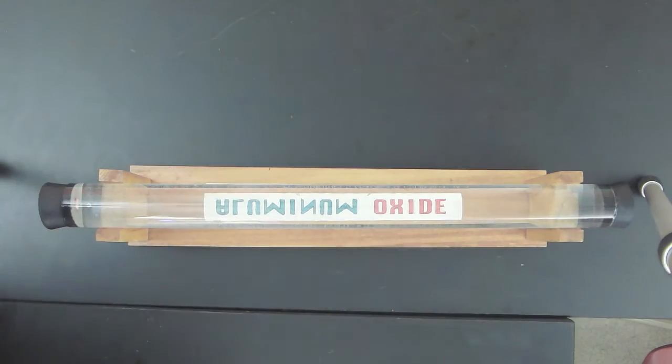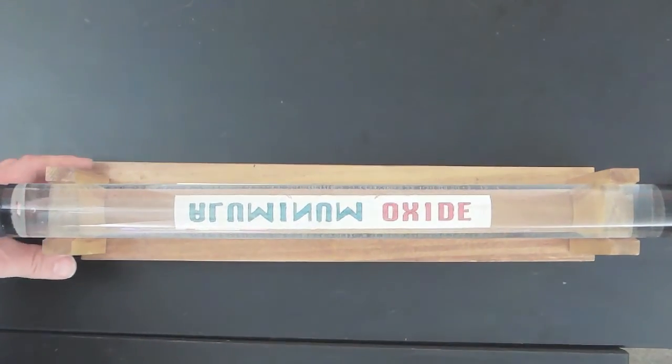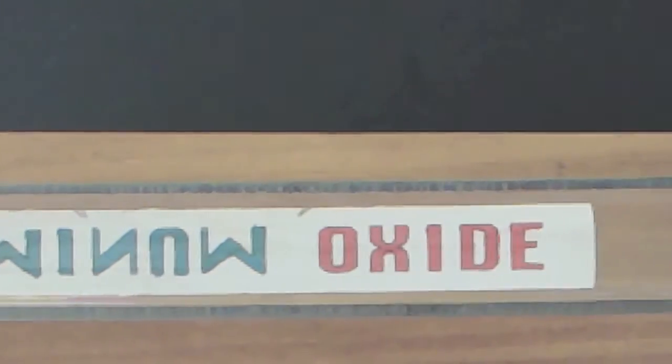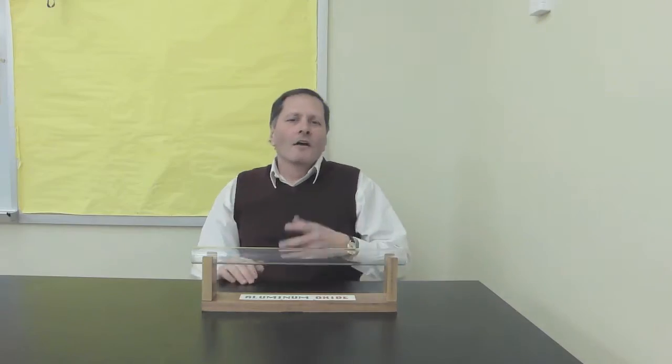This time when I put the tube back in the holder, the word aluminum appears to be upside down and I can't read it, and yet the word oxide still appears to be right side up. So what's going on?